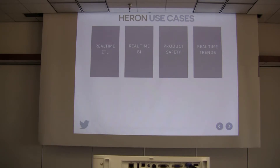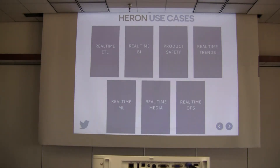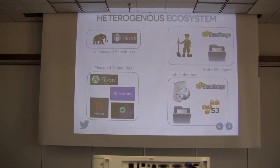Heron is used for several broad use cases within Twitter: real-time ETL, real-time BI (computing multiple cubes on the fly as data streams), product safety including spam detection and abuse detection, real-time trends, real-time machine learning including classification and model building and image classification, and real-time ops — all the data from Twitter's hundreds of thousands of machines is fed through Heron topologies to detect when a machine is going to fail or run slow.